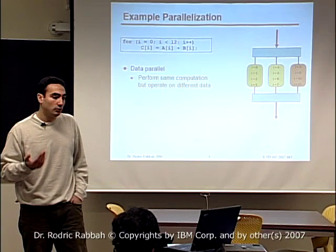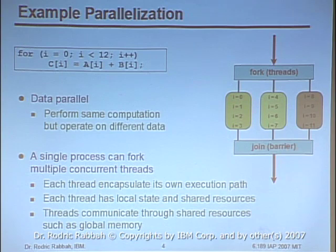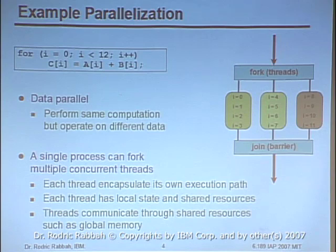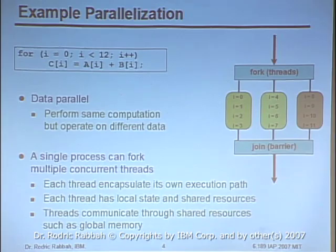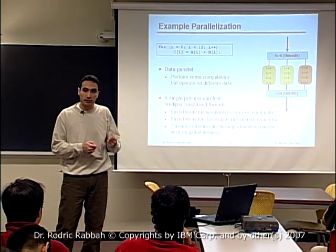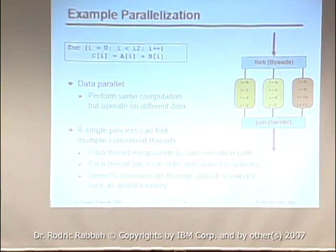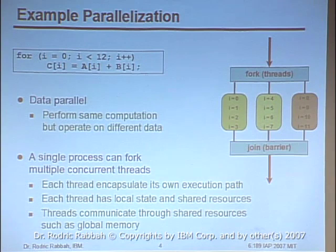A single process can fork off or create what are commonly called threads, and each thread goes on and executes — in this case — the same computation. Each thread is just a mechanism for encapsulating some trace of execution. You parameterize your start index and ending index, or loop bounds. In a shared memory processor, since there's only a single memory, you don't need to do anything special about the data in this particular example — everybody can access it, and there are no real issues with races or deadlocks.